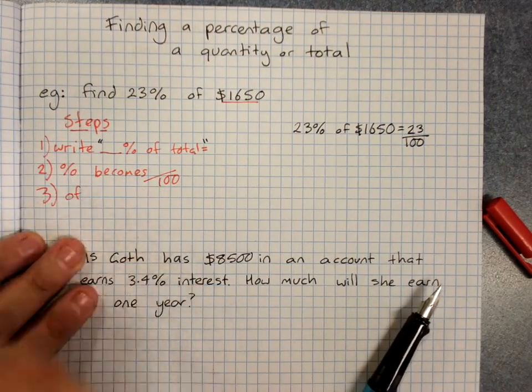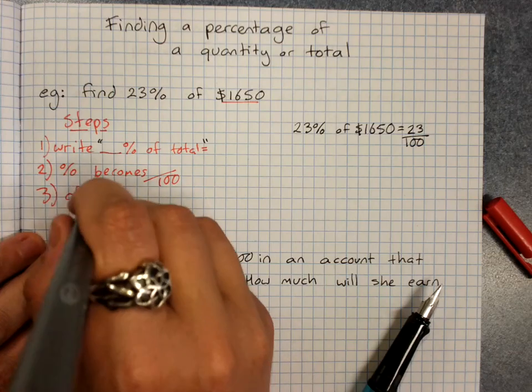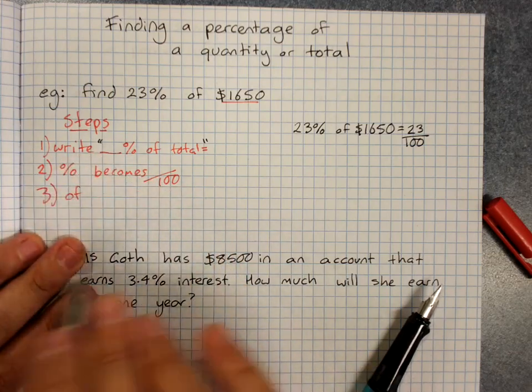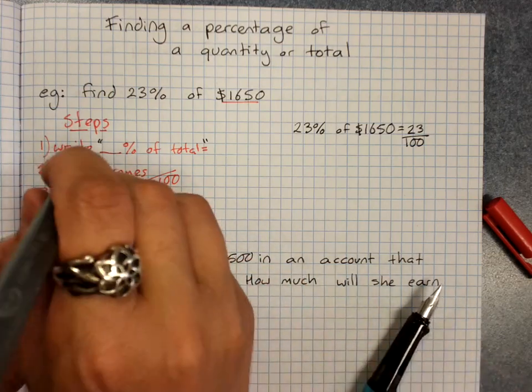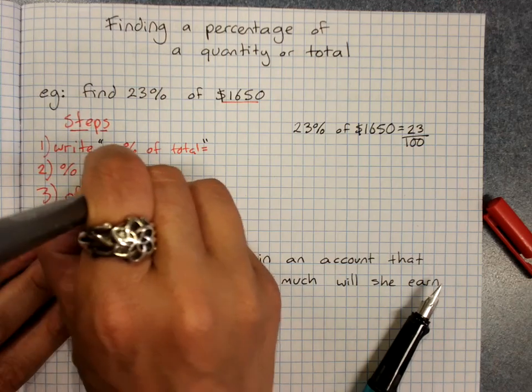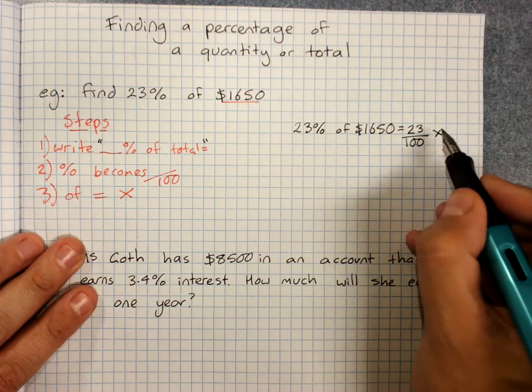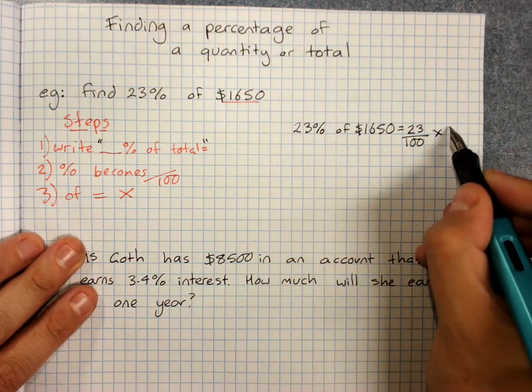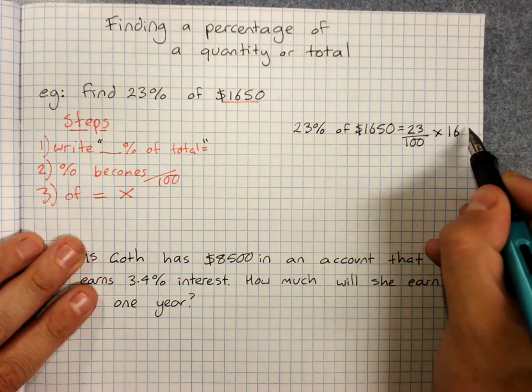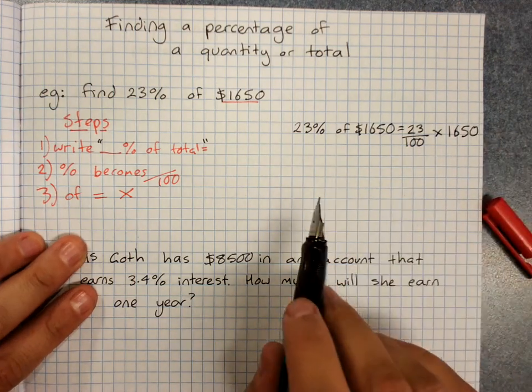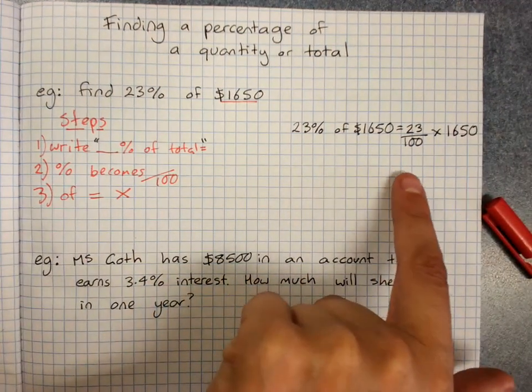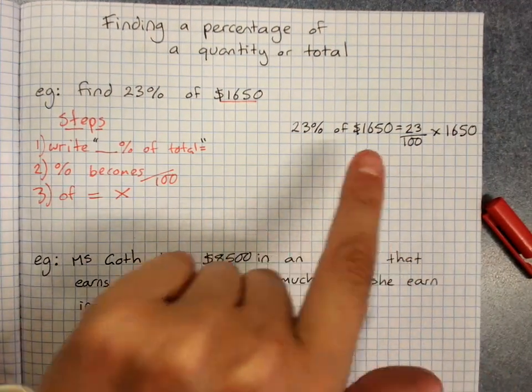Of always means times. In maths like remember lots of three lots of six would be three times six. Of equals times. So where the of was we're now going to write times and then we write the amount the total 1650. And that is what we type in to get the answer.